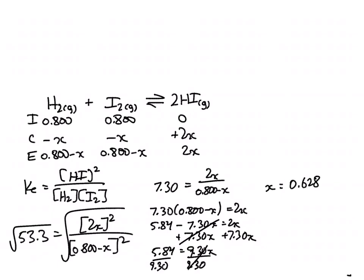And equilibrium concentration of HI is right here, so that's 2X. So HI at equilibrium is 2 times 0.628. This gives me an answer of 1.26 molar for the equilibrium concentration of HI.